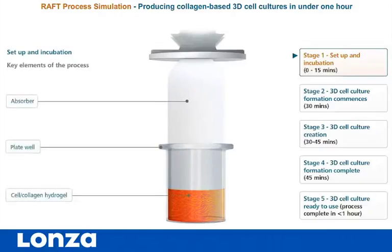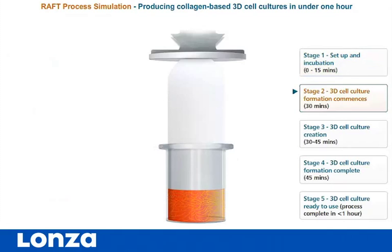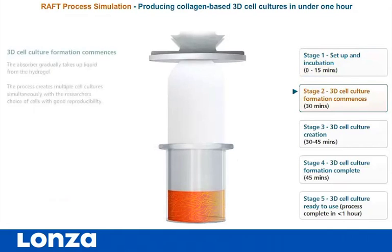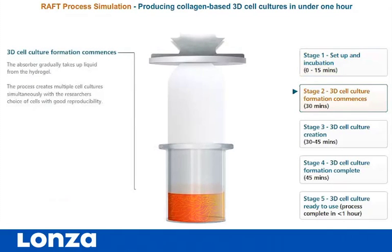Key elements of the process: the absorber, plate well, and cell or collagen hydrogel. Stage 2: 3D cell culture formation commences. The absorber gradually takes up liquid from the hydrogel, creating multiple cell cultures simultaneously with the researcher's choice of cells and good reproducibility.